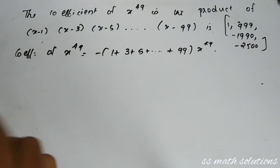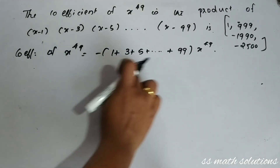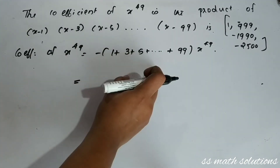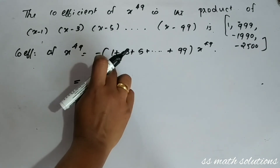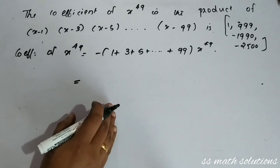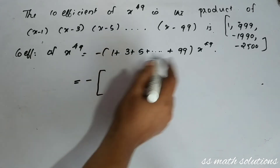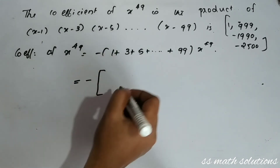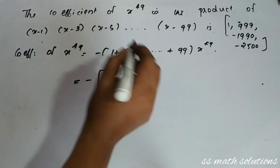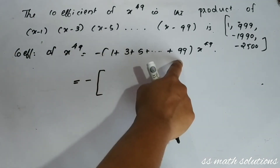This is the sum of odd numbers from 1 to 99, which is an arithmetic progression with first term 1, last term 99, and common difference 2. We apply the AP sum formula: S = (n/2) × (t₁ + tₙ).